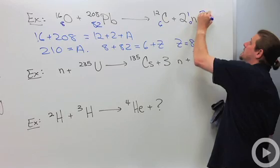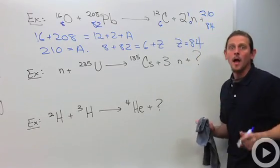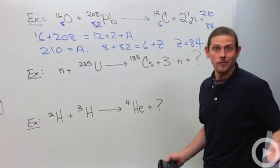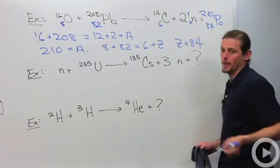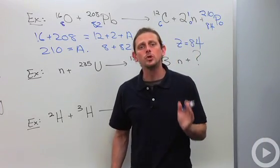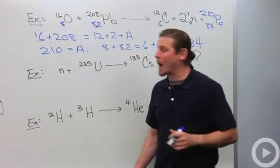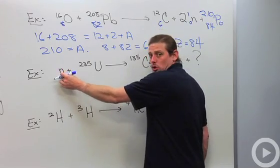We've got 210 on the top, 84 on the bottom. The 84 tells us what to call it because that's the atomic number. 84 happens to be polonium, so this is polonium-210 that comes out of this nuclear reaction. Let's go ahead to the next one.